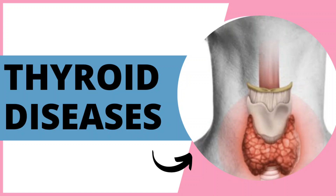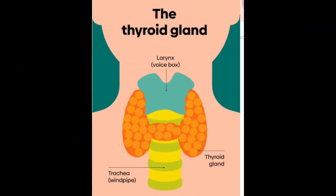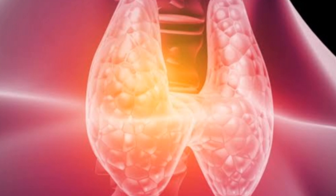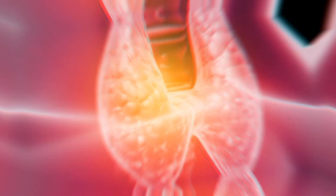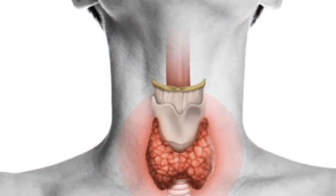In this video we will discuss thyroid diseases. The thyroid gland is a small organ located in front of the neck, wrapped around the windpipe — the trachea. It's shaped like a butterfly, smaller in the middle with two wide wings that extend around the side of your throat.